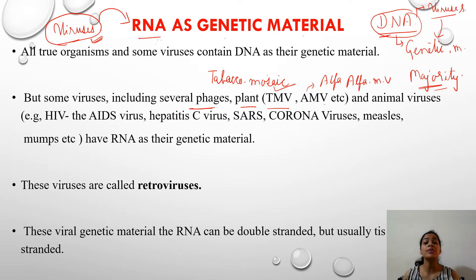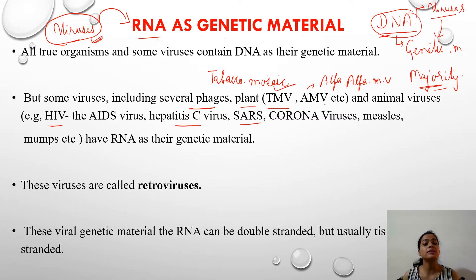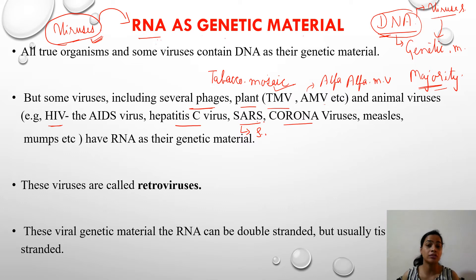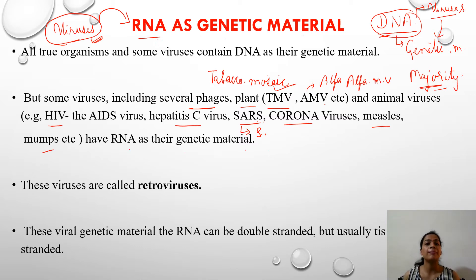Apart from this, there are some animal viruses like HIV, the AIDS virus, hepatitis C virus, SARS virus — severe acute respiratory syndrome coronavirus, which is very well known in today's world — measles virus, and mumps virus. All these viruses are examples of viruses which contain RNA as their genetic material.